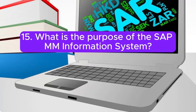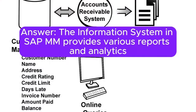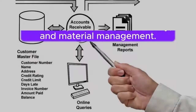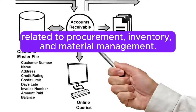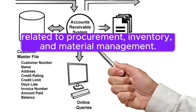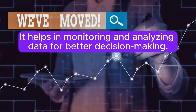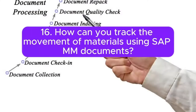Question 15: What is the purpose of the SAP MM information system? Answer: The information system in SAP MM provides various reports and analytics related to procurement, inventory, and material management. It helps in monitoring and analyzing data for better decision-making.